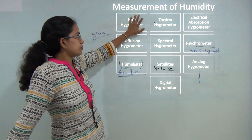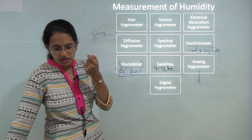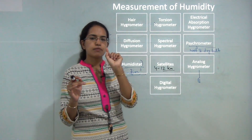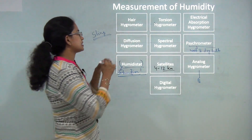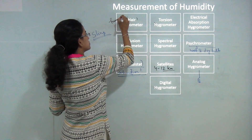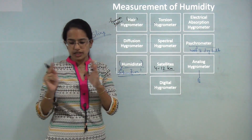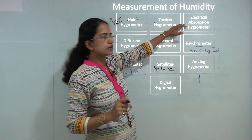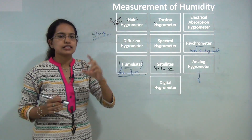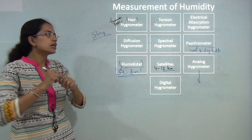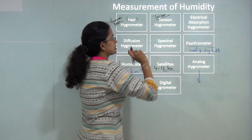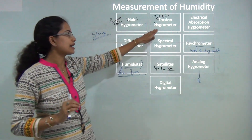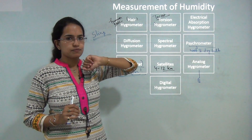A hair hygrometer is a very interesting instrument because it detects changes in relative humidity by means of human hair. The length of human hair varies with moisture, and this variation is noted by the hair hygrometer. A torsion hygrometer works by twisting the hair, where the twisting leads to rotation, expansion, and contraction, helping you read the amount of humidity present in the atmosphere.